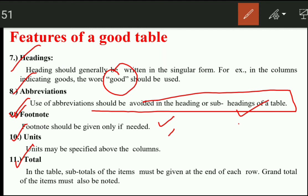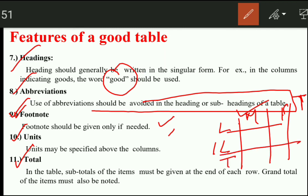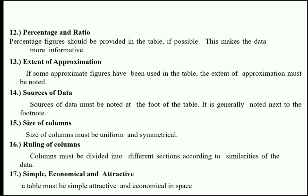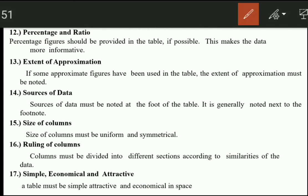We have already discussed that values like lakhs and crores should be mentioned as units in the table. The total of items must be given at the end of each row. For example, in a table with literate and illiterate male and female, we take the row total. The grand total must also be noted so that our overall picture is clear. If possible, percentage or ratio figures should be provided in the table — for example, 50% or 20% — as this makes the data more informative.